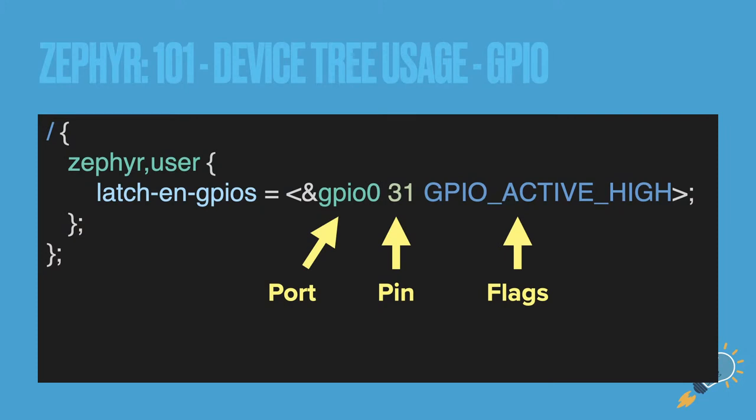On the device tree side — and this could be in an overlay — a GPIO definition starts with the port, then the pin number, then the flags. The port name differs by the chip you have: on NRF, you'll typically use `gpio0`. NRF52 and NRF53 have two ports, `gpio0` and `gpio1`.